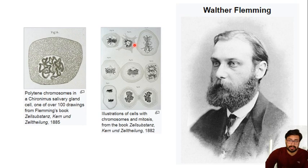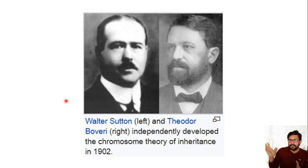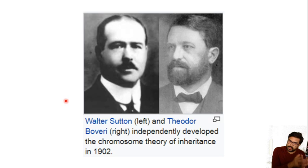Then came Walter Fleming, who was the first person to draw a chromosome — these are drawings from his book. Then came Walter Sutton and Boveri, who both independently worked out the chromosomal theory of inheritance. This was a meeting point: Mendel knew about inheritance, Fleming described chromosomes, and when the chromosomal theory of inheritance came about, both fused into the subject we know as genetics — that is when people came to know that chromosomes are responsible for inheritance.